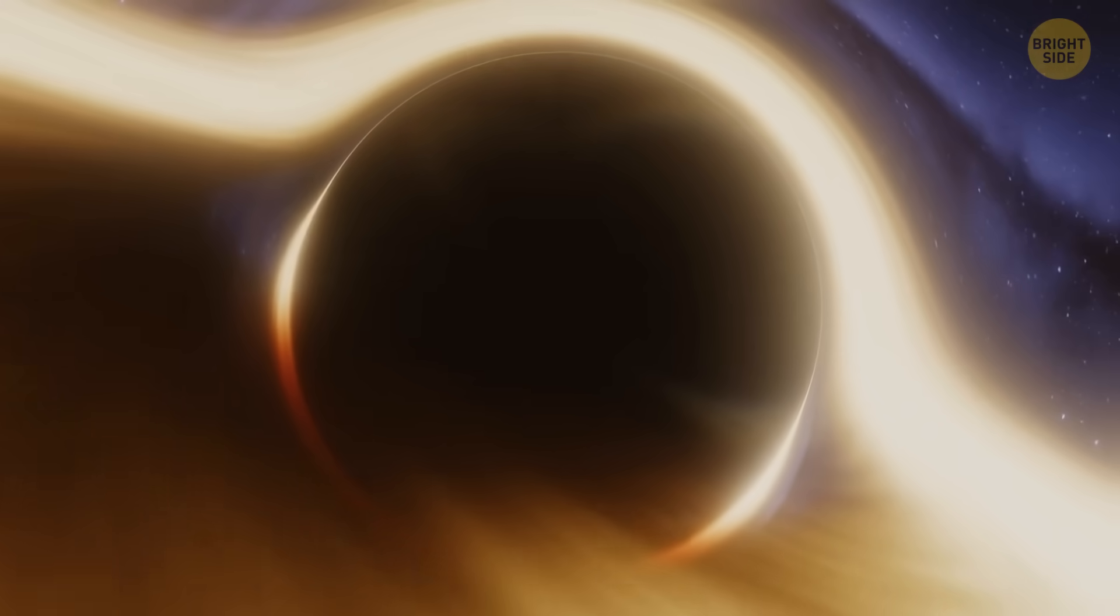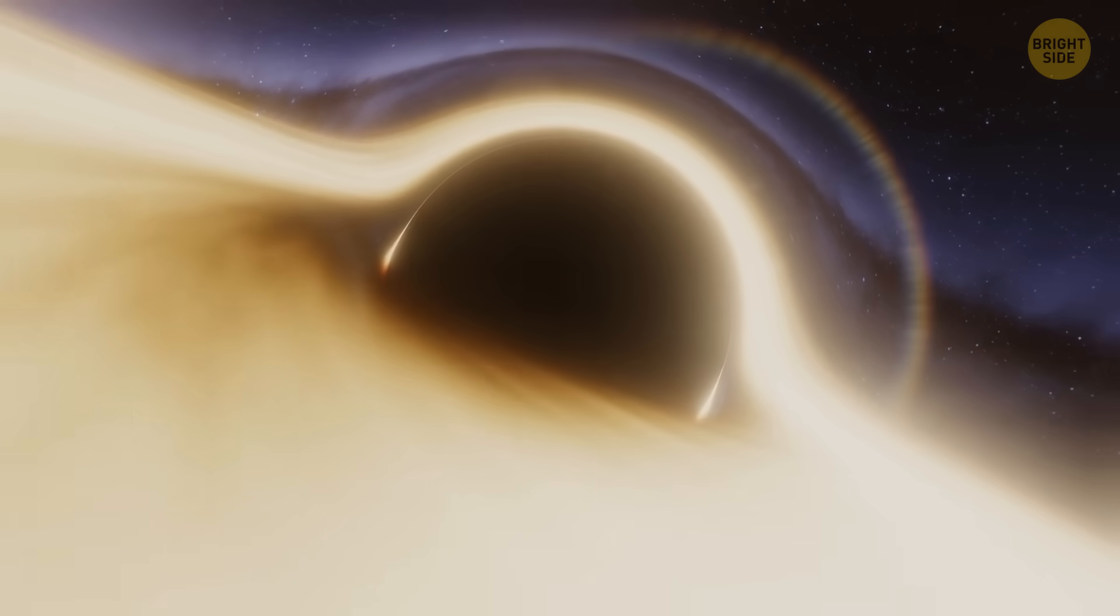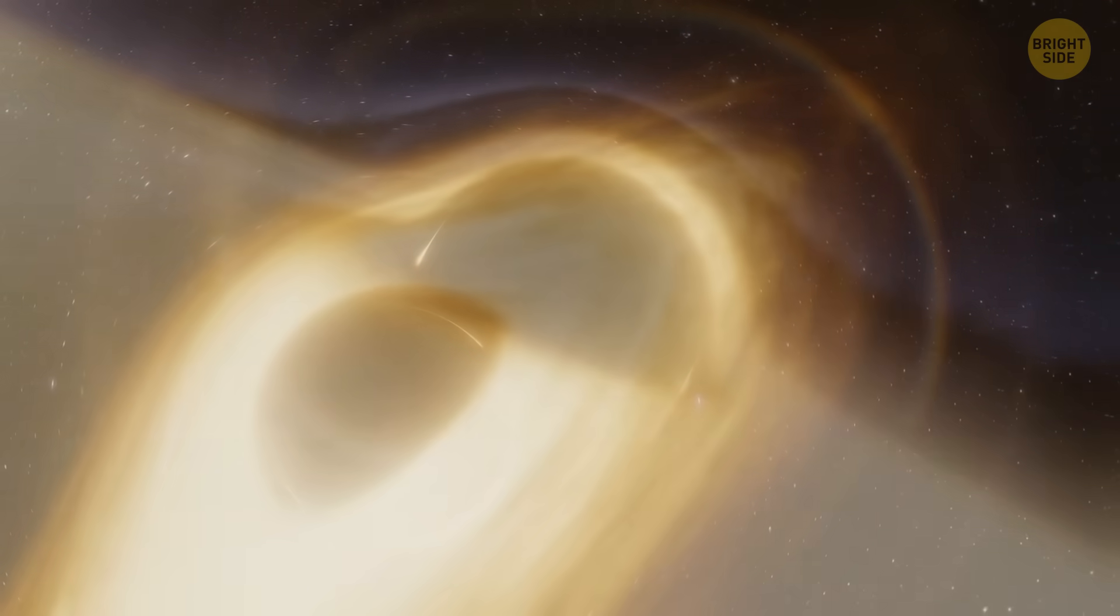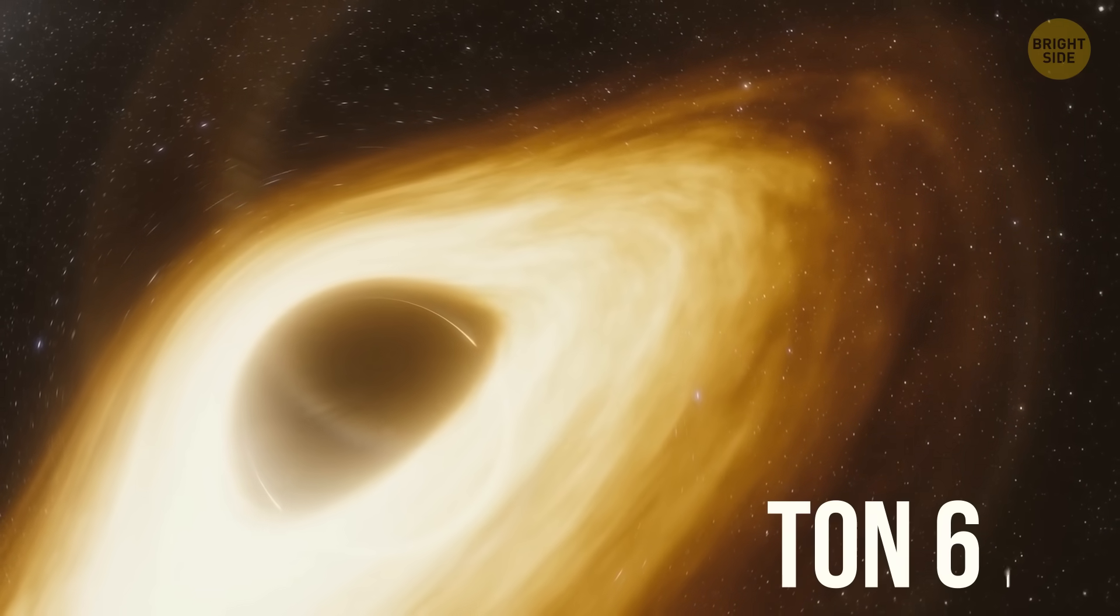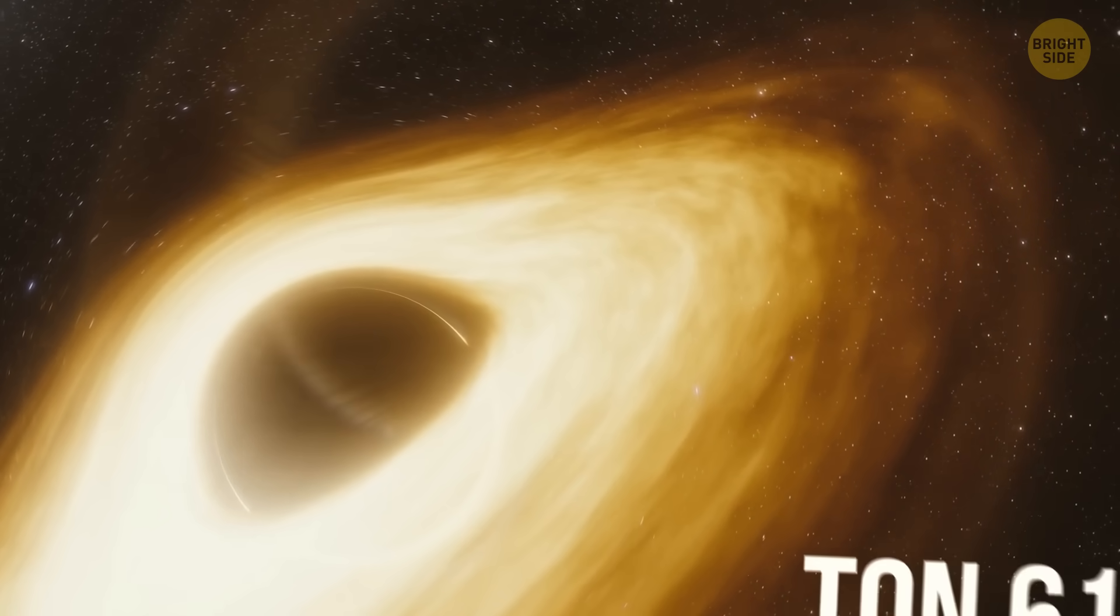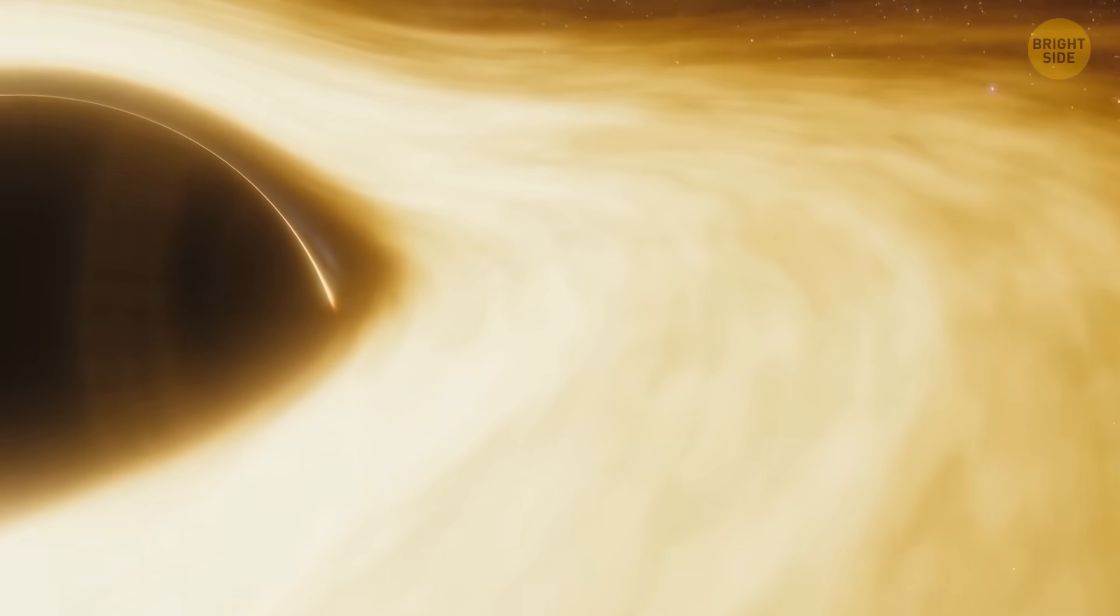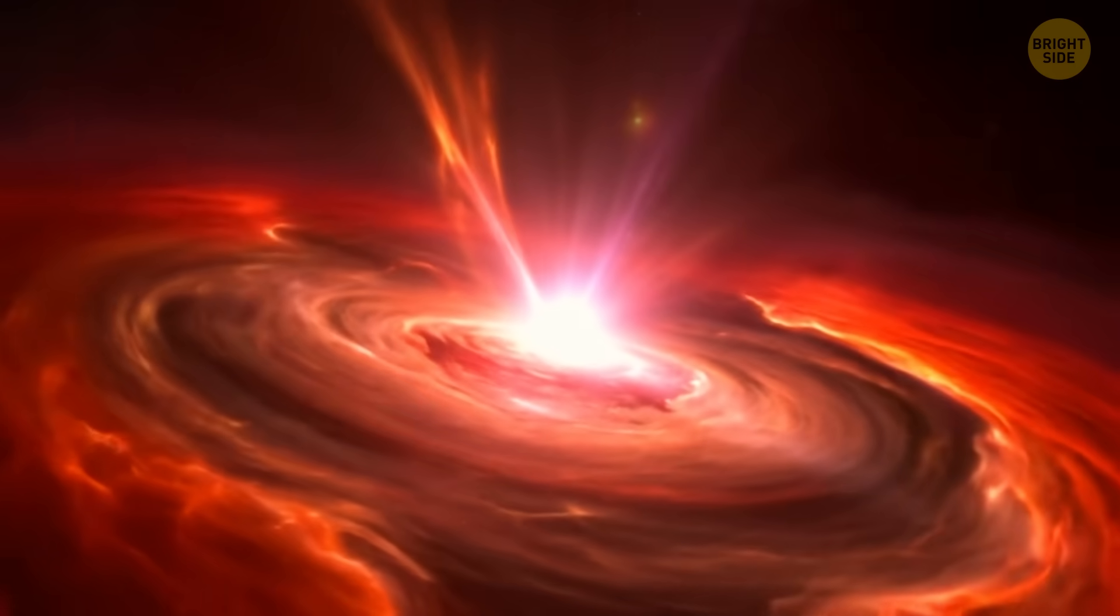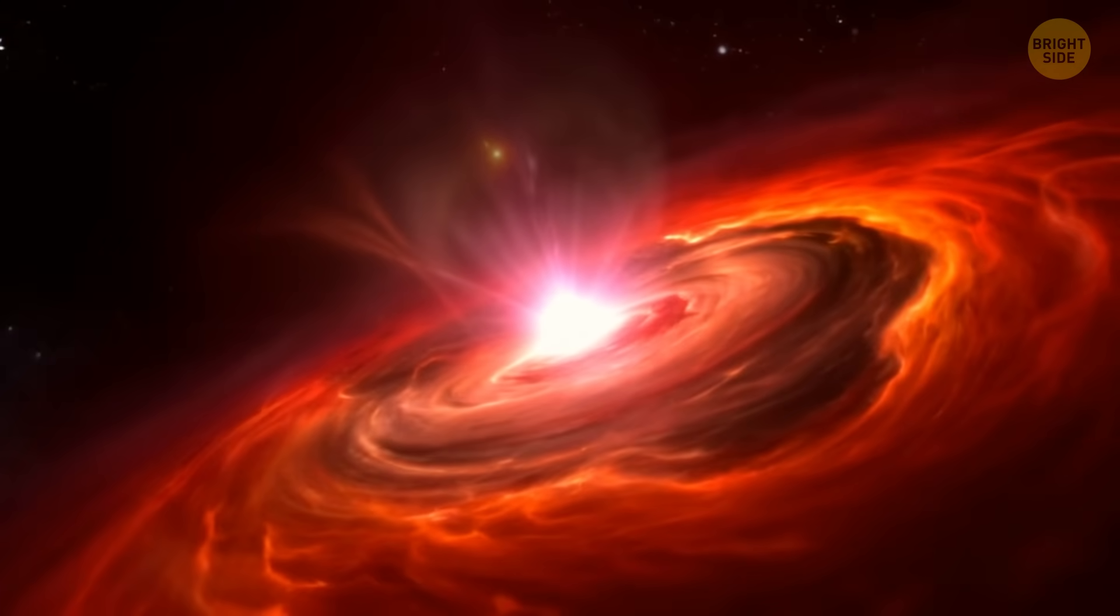They're huge, with masses millions to billions of times bigger than our sun. One of those is called TON-618. It's a really huge and powerful black hole that's part of something called a quasar. A super bright spot in space, emitting incredible amounts of energy.